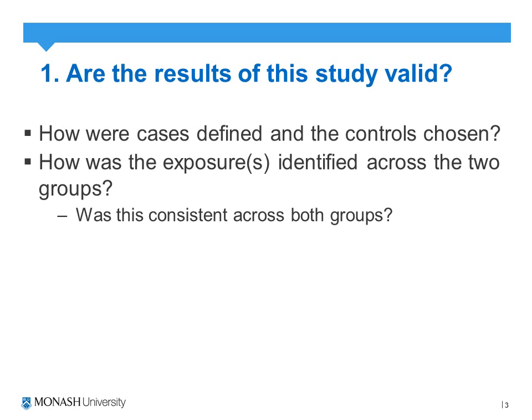We want to identify the inclusion criteria, so to speak, of the cases and the controls — how they were identified. This is relevant because it relates back to the generalisability of the study. We want detailed information about what criteria must be met to be defined as a case, likewise for a control, and how those cases and controls were chosen.